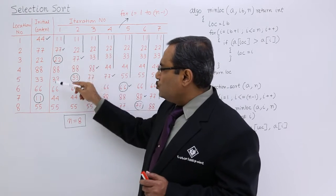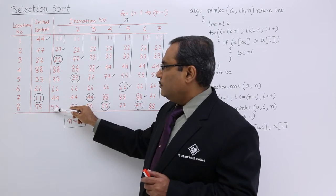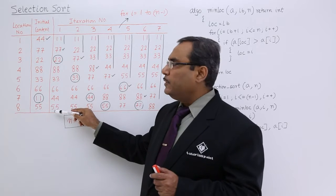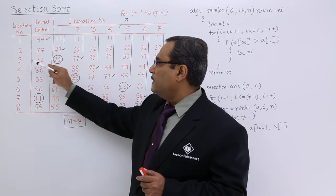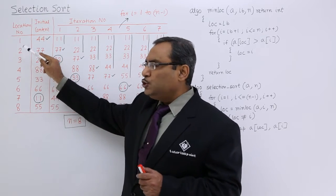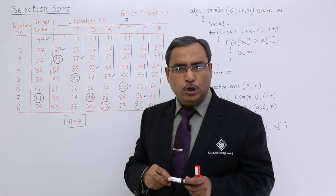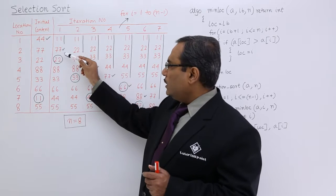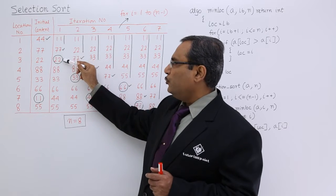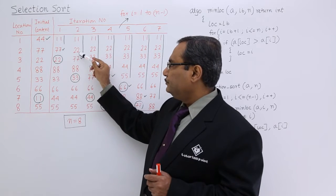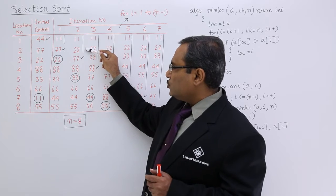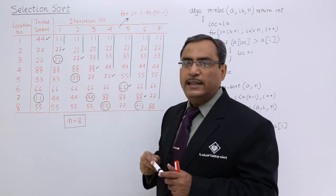Now, from 2 to 8, what is the place number of the minimum data? Here the place number is 3. Is 3 equal to 2? No. So whatever we are having at position 2 should be swapped with 22. Now the array has been sorted up to this limit.